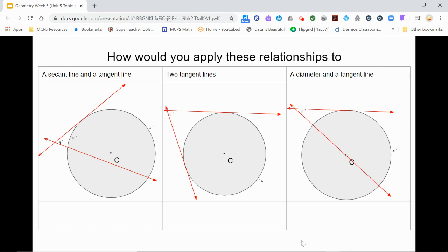In the first case, the two lines are still intersecting outside the circle. And the tangent line, although not passing into the interior of the circle, still divides the circle into arcs. So as before, n equals half the difference of the two arc measures.